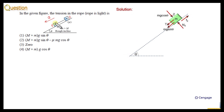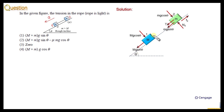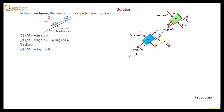Now we can consider block number one. Similarly, we can make the component of the weight parallel to the incline and perpendicular to the incline. These components, the normal reaction, and the tension force will act in the upward direction. This block is again sliding down, so the friction force will be in the upward direction and kinetic in nature.